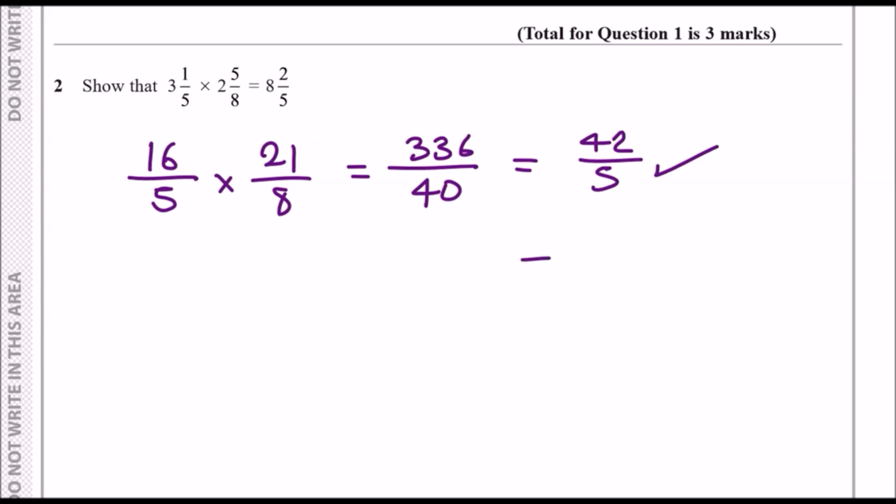Because you have literally one more step to go from here to the result, just write the answer directly as 8 and 2/5. If you guys are not sure you can put in bracket 'shown' just to be clear that you've reached the result.